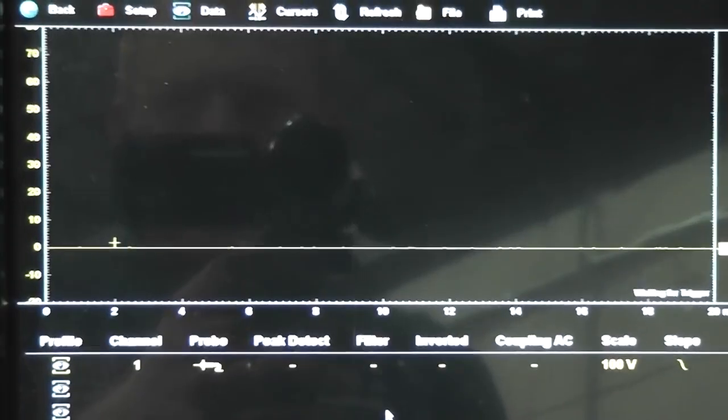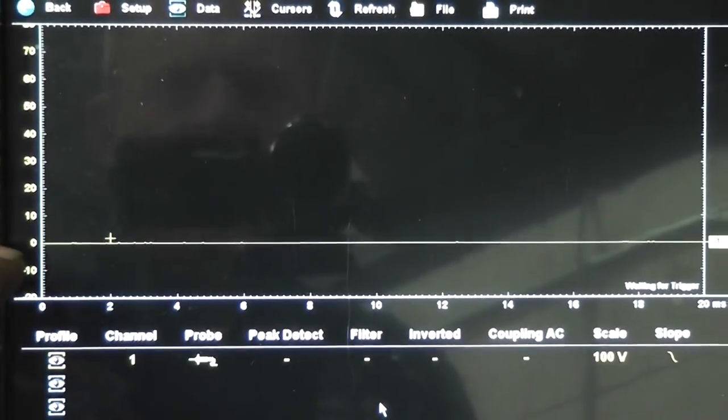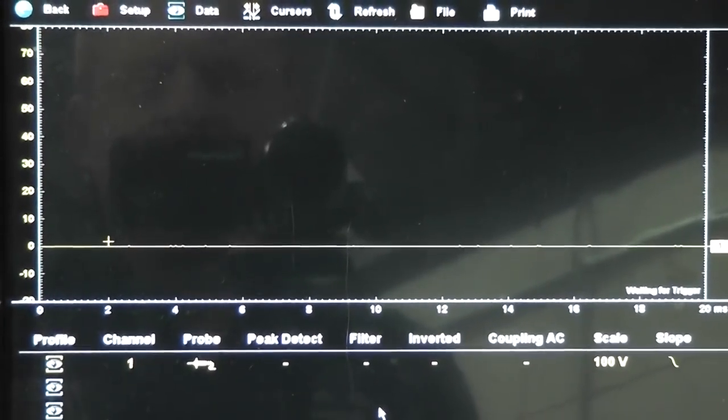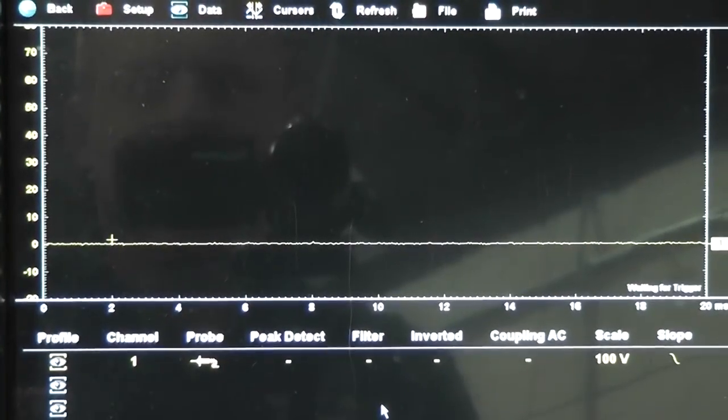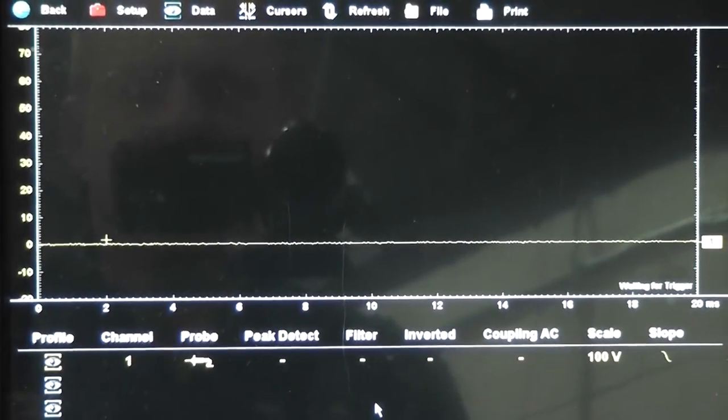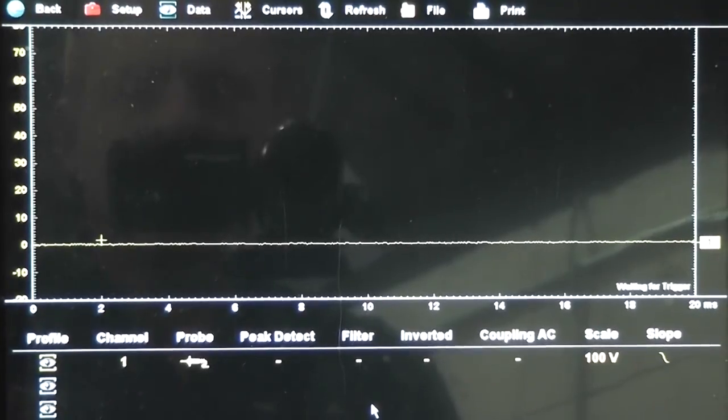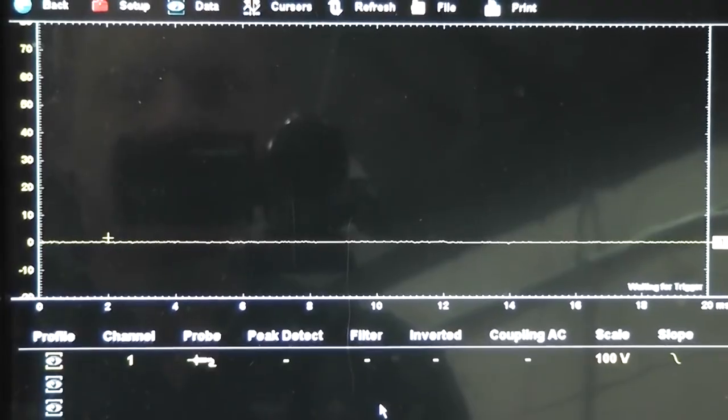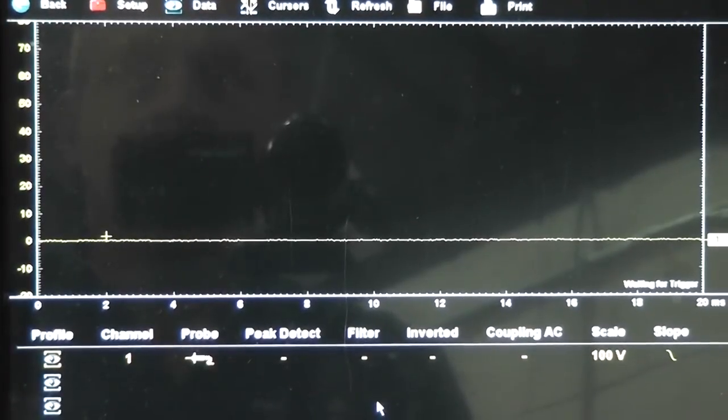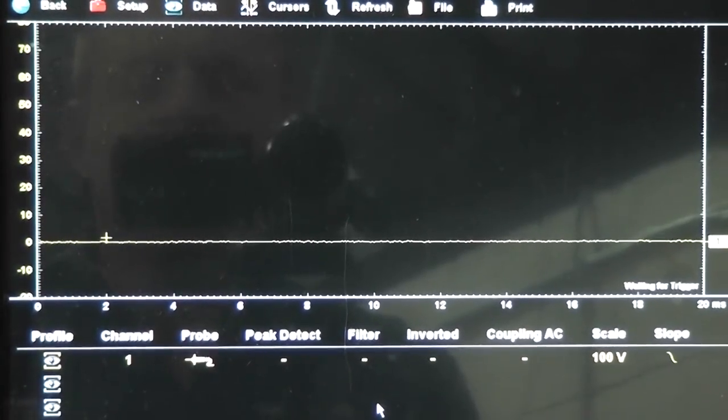This is the number five injector control wire. We got zero volts right now with the key off. I'm going to start it up. Got a long crank time, having trouble running. Got a flat line zero volts on that wire. Got no control. Shut it off.